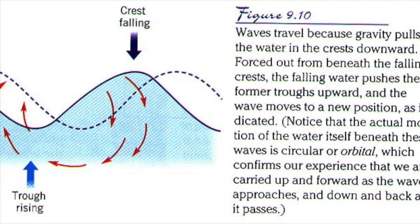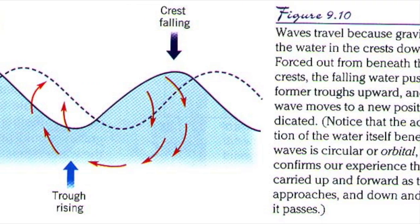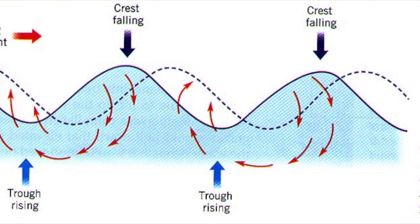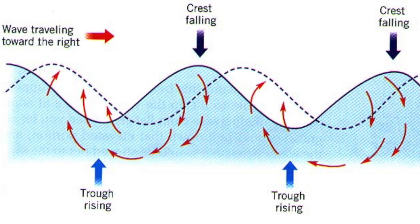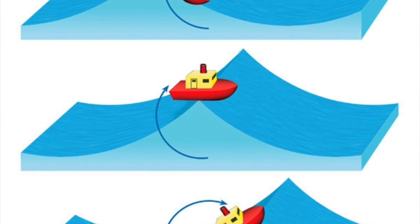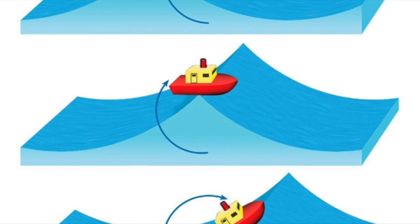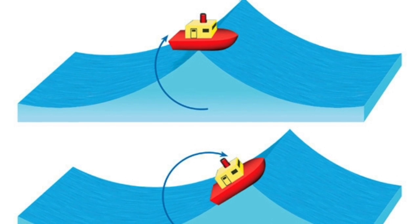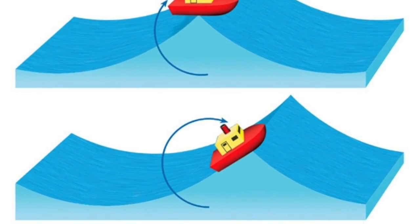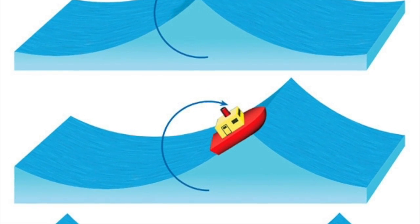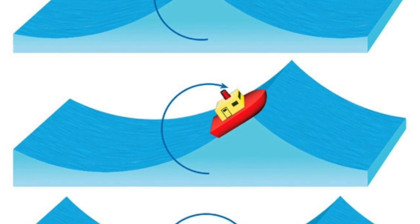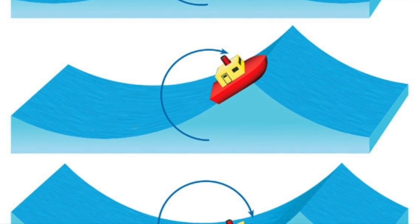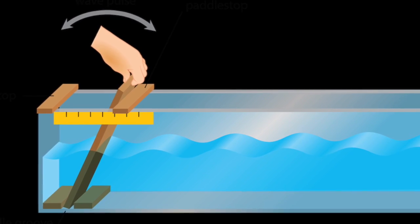As a wave travels, the water passes energy along by moving in a circular orbit. Orbital size decreases with depth to zero at the wave base. Floating objects will follow circular orbits. The depth of a wave base is half the wavelength, measured from still water level. Orbital motion pushes the waves forward.